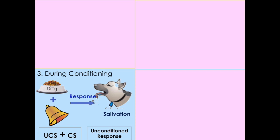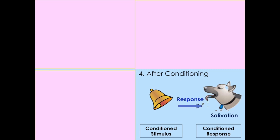During the conditioning process, the pairing occurs — you pair the unconditioned stimulus with the conditioned stimulus. Pavlov paired the unconditioned stimulus of food with the conditioned stimulus of the bell, doing both at the same time. The response during this stage is still an unconditioned response, because the food is still present. After conditioning, the conditioned stimulus alone will cause a conditioned response — something that began as a neutral stimulus now causes a conditioned response.